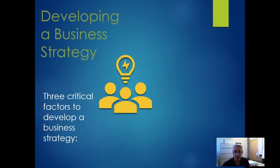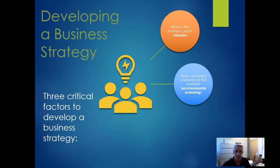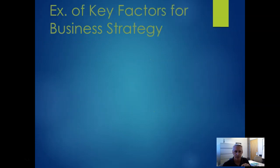Backing up to the overall business strategy, there are three critical factors that lead to our operational strategy. First, what is our mission — our overall goal? Second, does the company understand the market? This is what we call environmental scanning. Third, what are the company's strengths — our core competencies? Those core competencies are what we can build off of as we go.